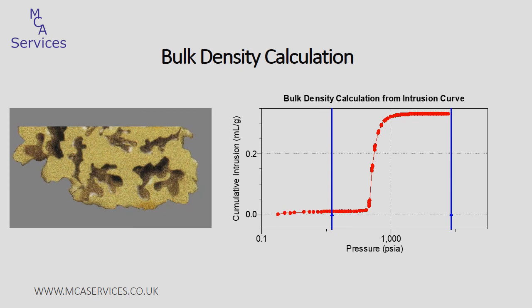Bulk density, also called envelope density, is calculated by including the volume of all pores within a sample. It's conveniently undertaken by mercury porosimetry and can be applied to single solid pieces of sample, as well as powders and granules. For powder and granular samples, it may be possible to calculate a range of bulk density values at different characteristic points of the mercury intrusion curve, as shown by the two blue lines on the plot on the right-hand side of the screen.